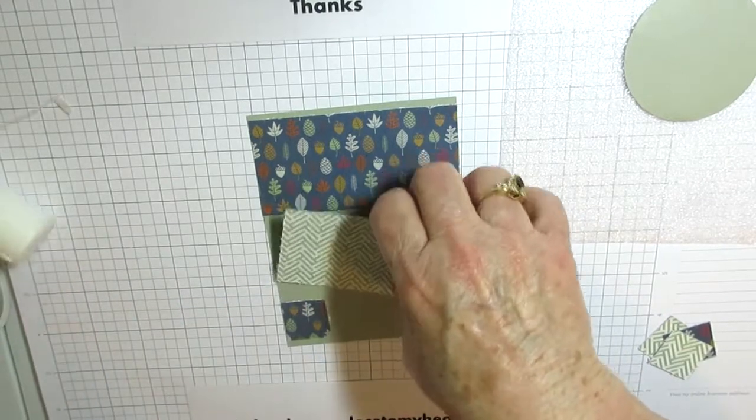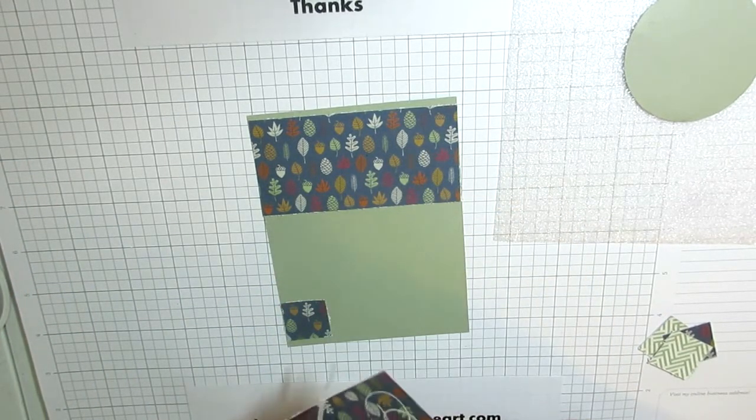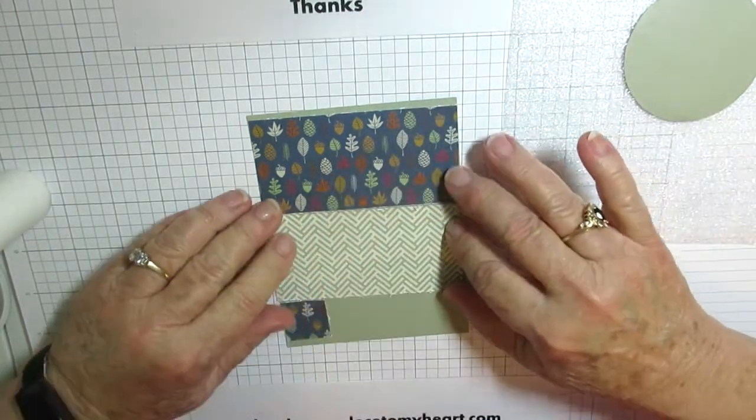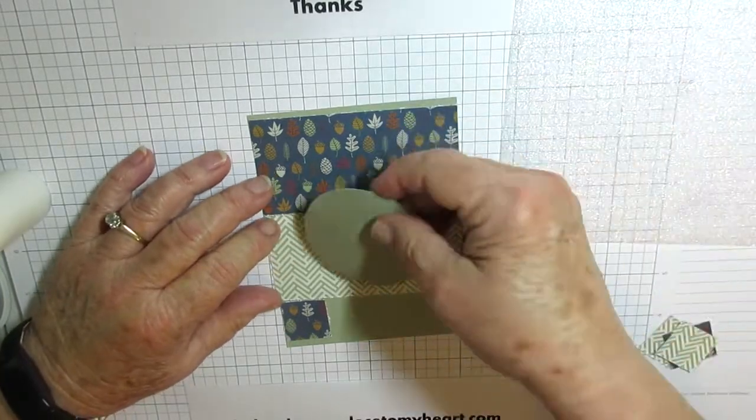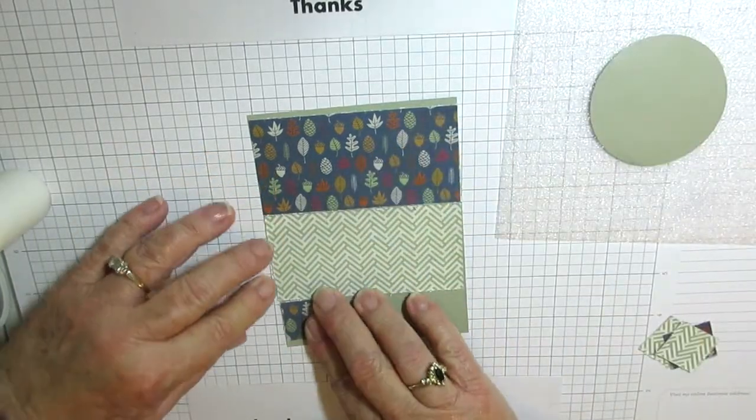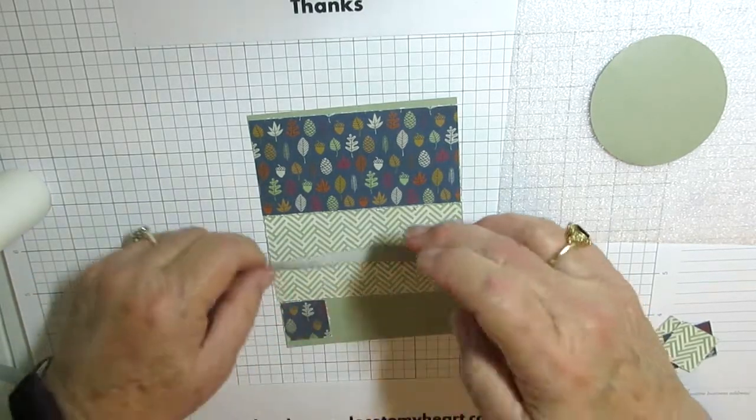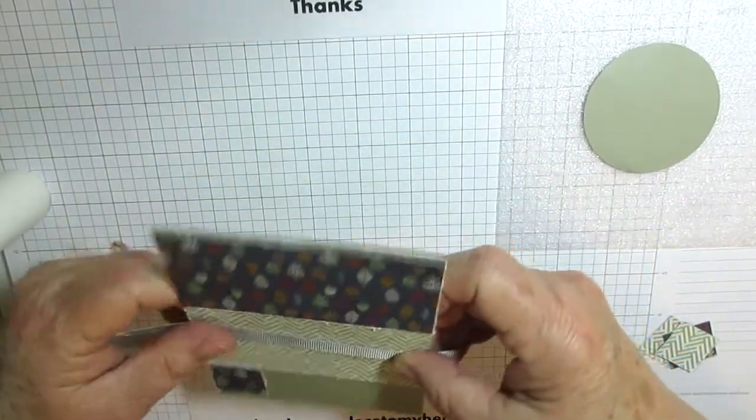And then I'll attach the middle piece. And then I'm going to use the ribbon around the center because my sentiment is going to go on this circle. So I'm going to use my ribbon and I've cut it out.